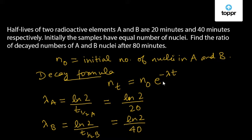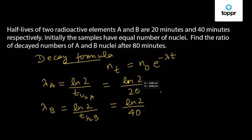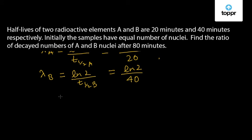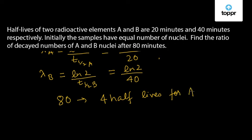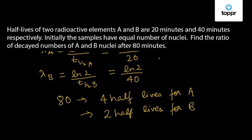We have to calculate the ratio of decayed numbers of A and B nuclei after 80 minutes. So what is 80 minutes? 80 minutes is 4 half-lives for element A, and it is 2 half-lives for element B, because the half-life of element A is 20 minutes and the half-life of element B is 40 minutes.